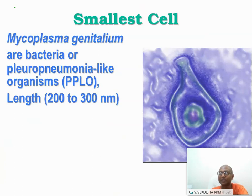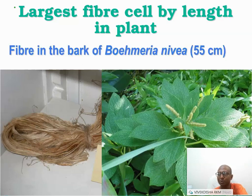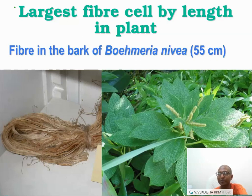The smallest cell is Mycoplasma. Now, the largest fiber cell by length in plants — it is from the jute family, Boehmeria nivea, also known as the ramie plant. The fiber in the bark is 55 centimeters long. This is the largest cell in plants. We are using the five kingdom classification, so plants must belong to the plant kingdom only.